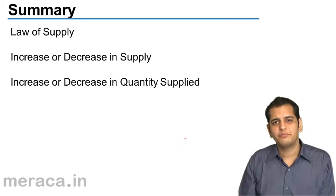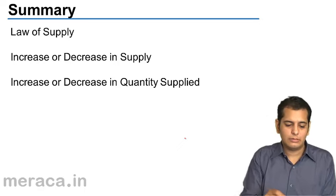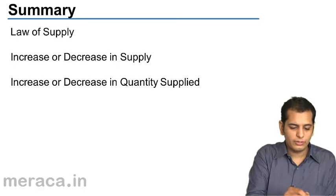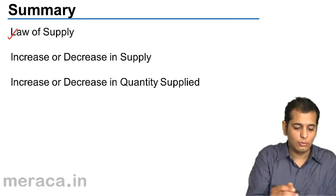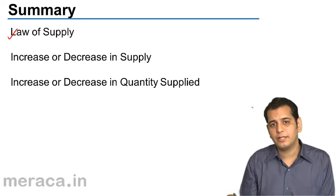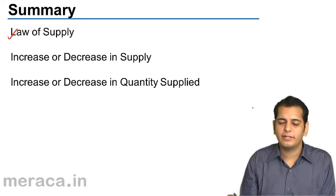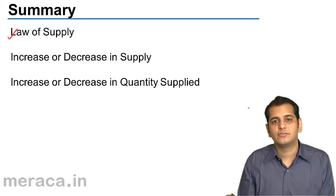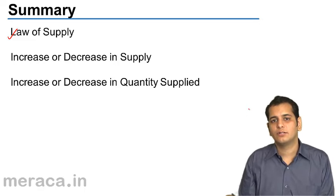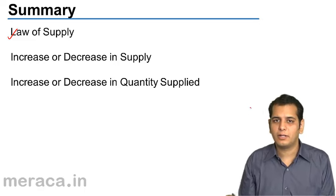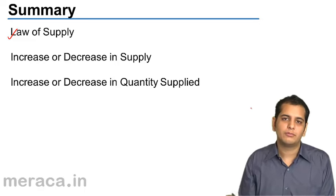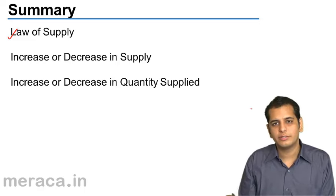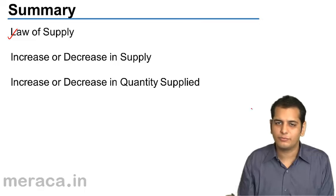Let's summarize what we have done till now. We have studied the Law of Supply. The Law of Supply says: when the price rises, the quantity supplied also rises, and when the price falls, the quantity supplied of that product also falls.